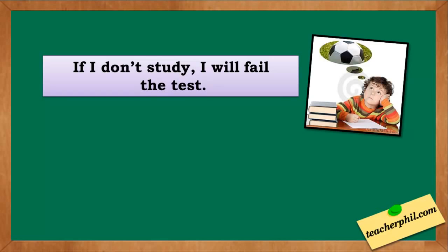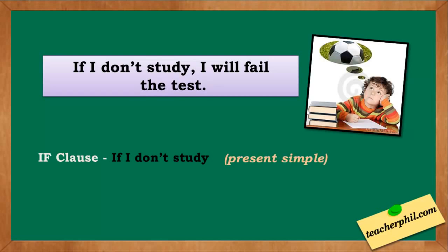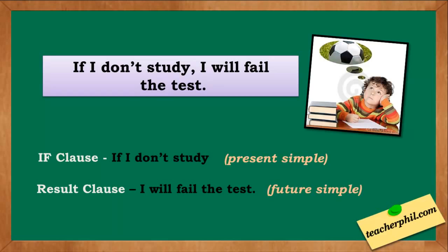Example: If I don't study, I will fail the test. This is an event which is very possible. Our IF clause is 'if I don't study,' which is in the present simple tense. The RESULT clause is 'I will fail the test,' which is in the future simple tense.